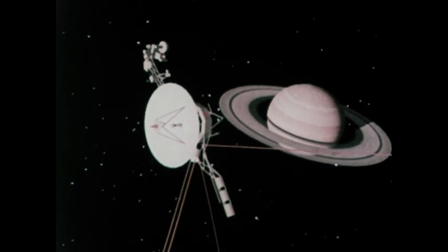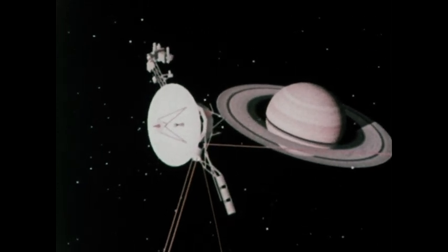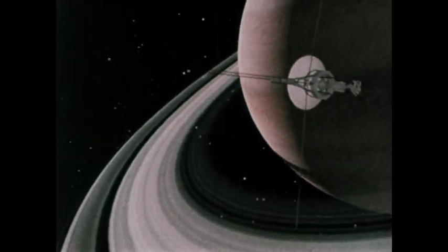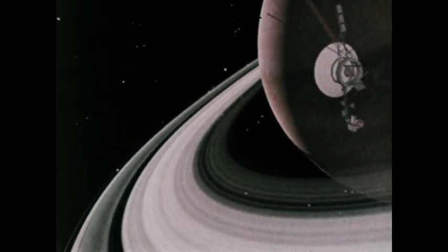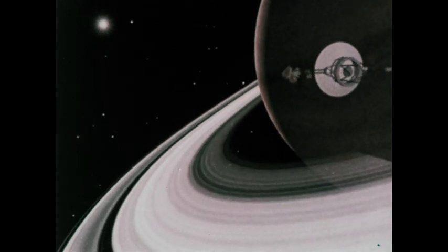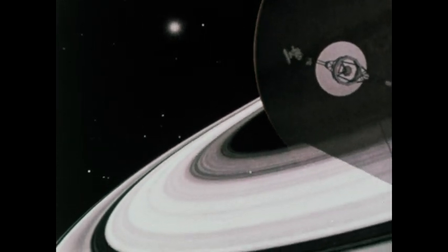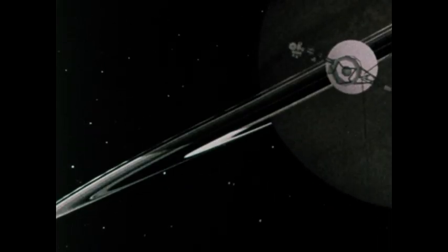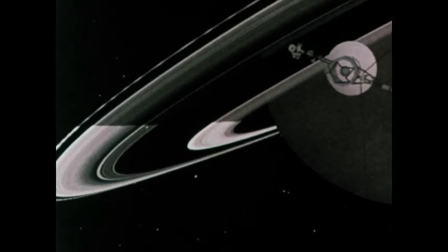As Voyager space probes analyzed Jupiter, Saturn, and their moons, were they time-traveling to the Earth of 4 billion years ago? If so, our hypothesis about the early Earth is a good one, for the data indicate atmospheres containing hydrogen, methane, ammonia, and water in the form of ice.